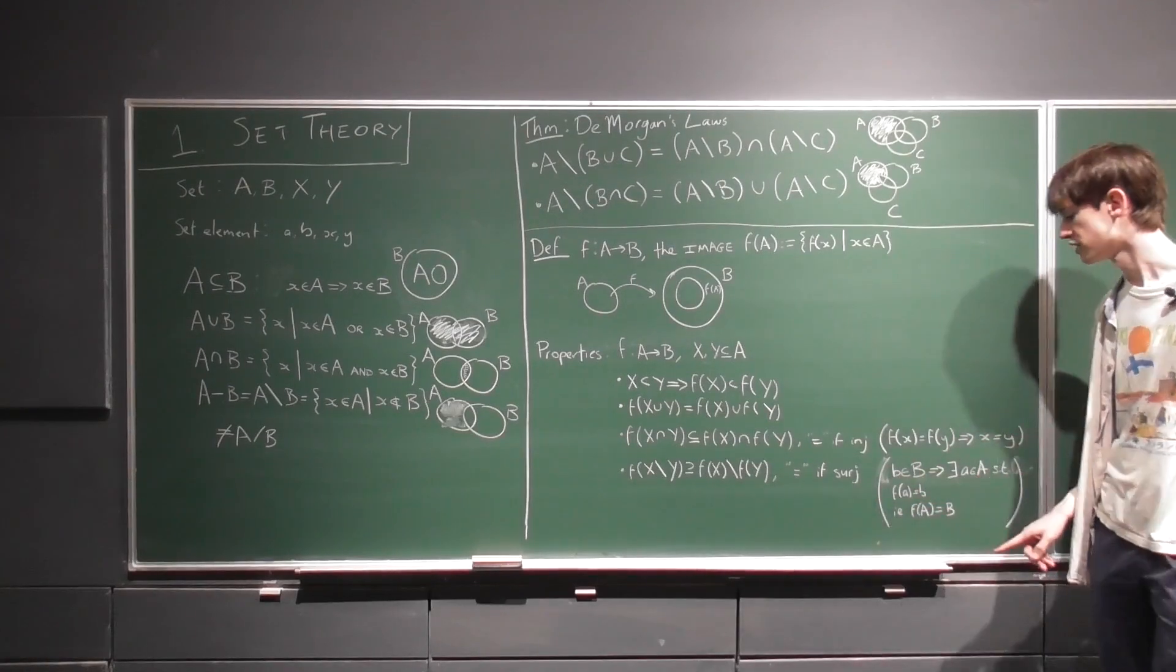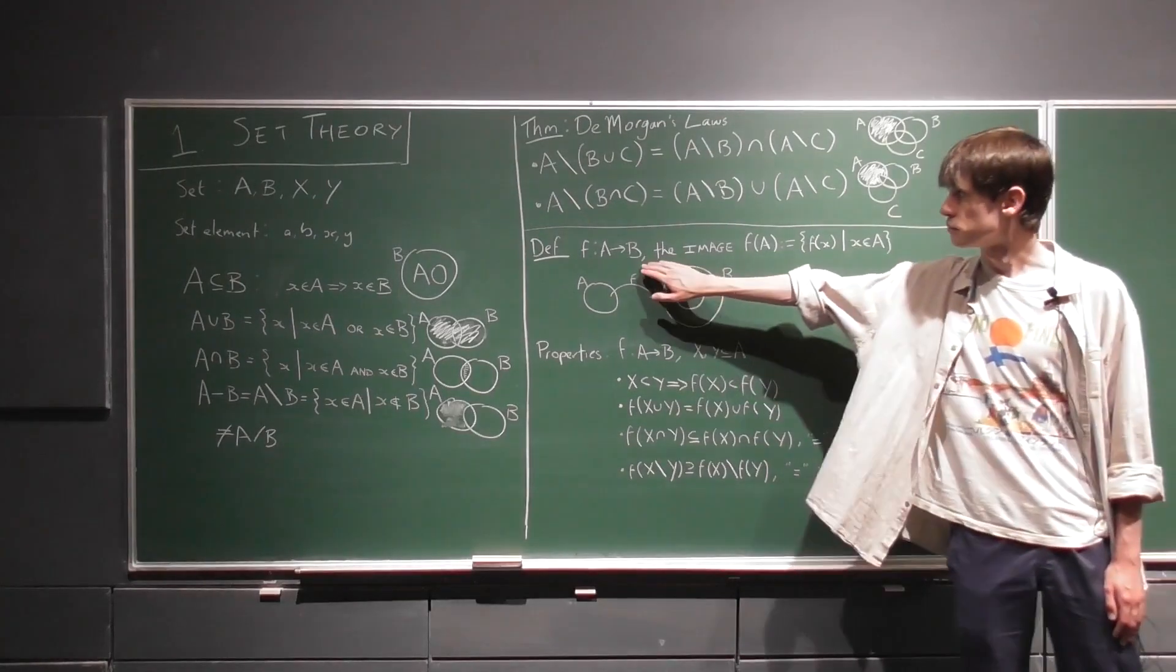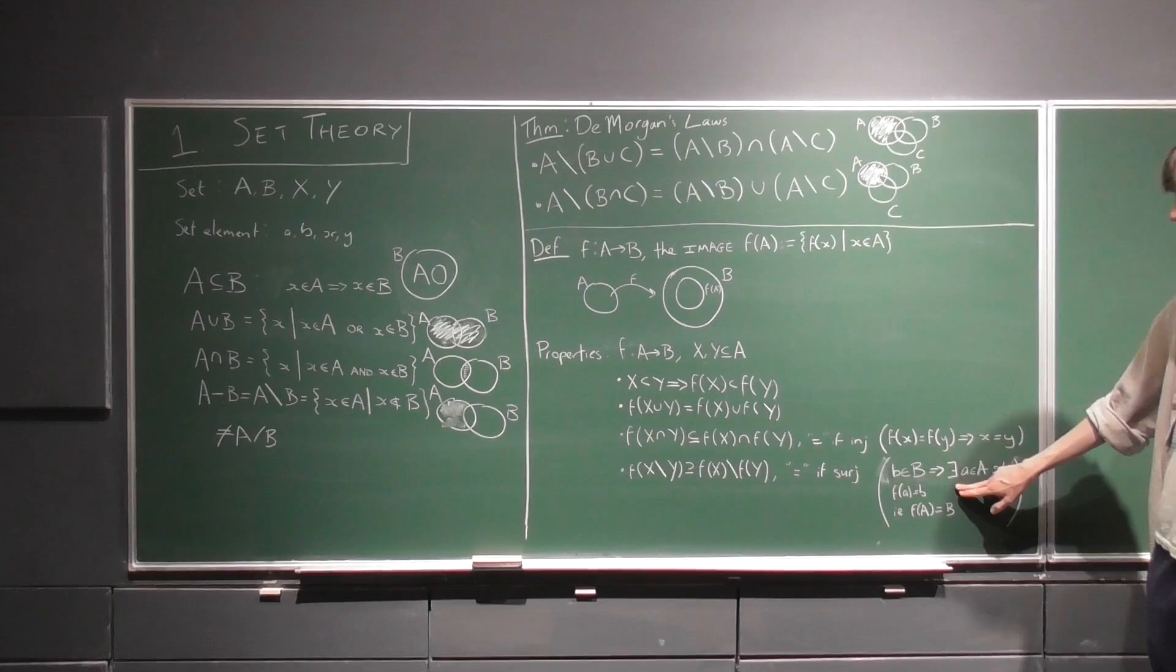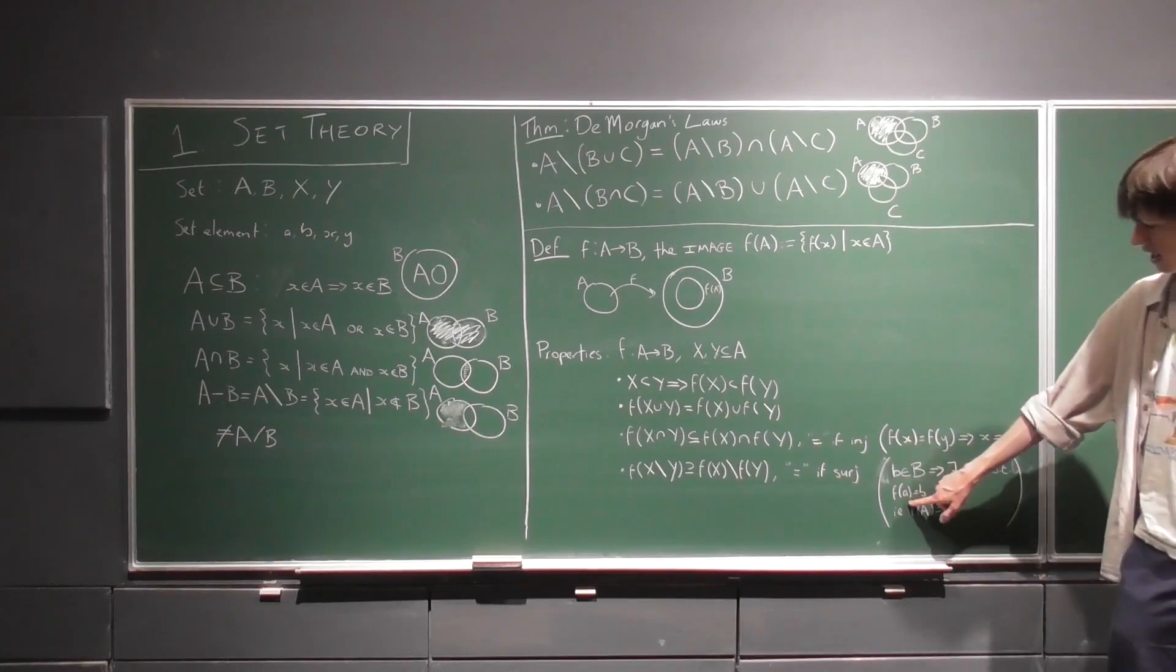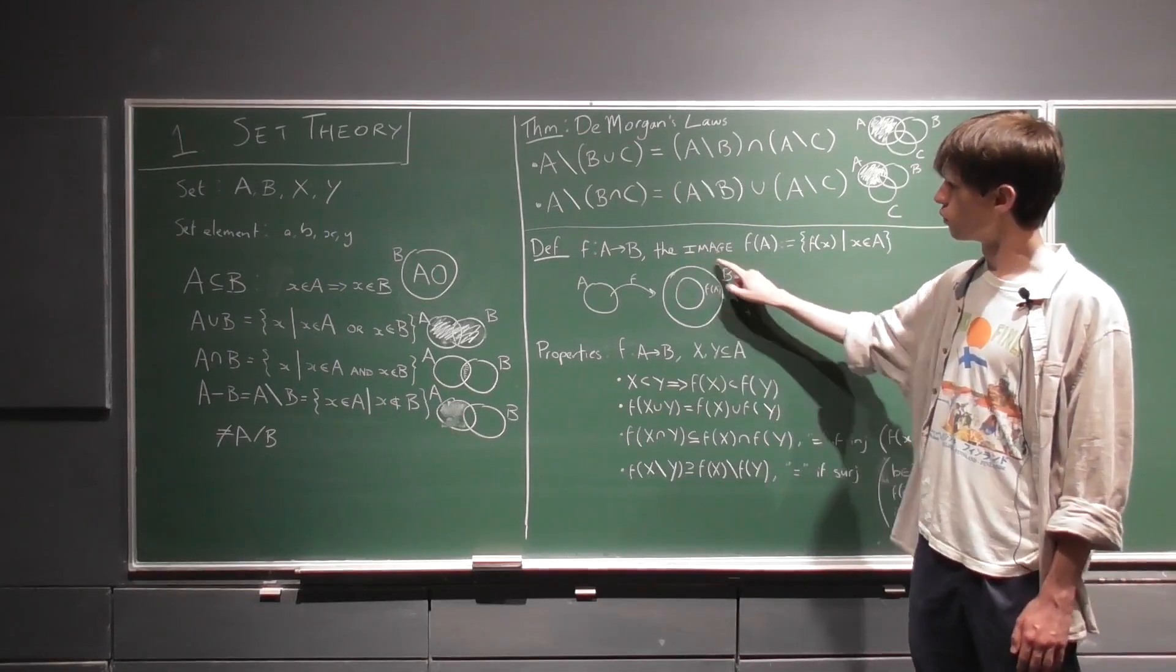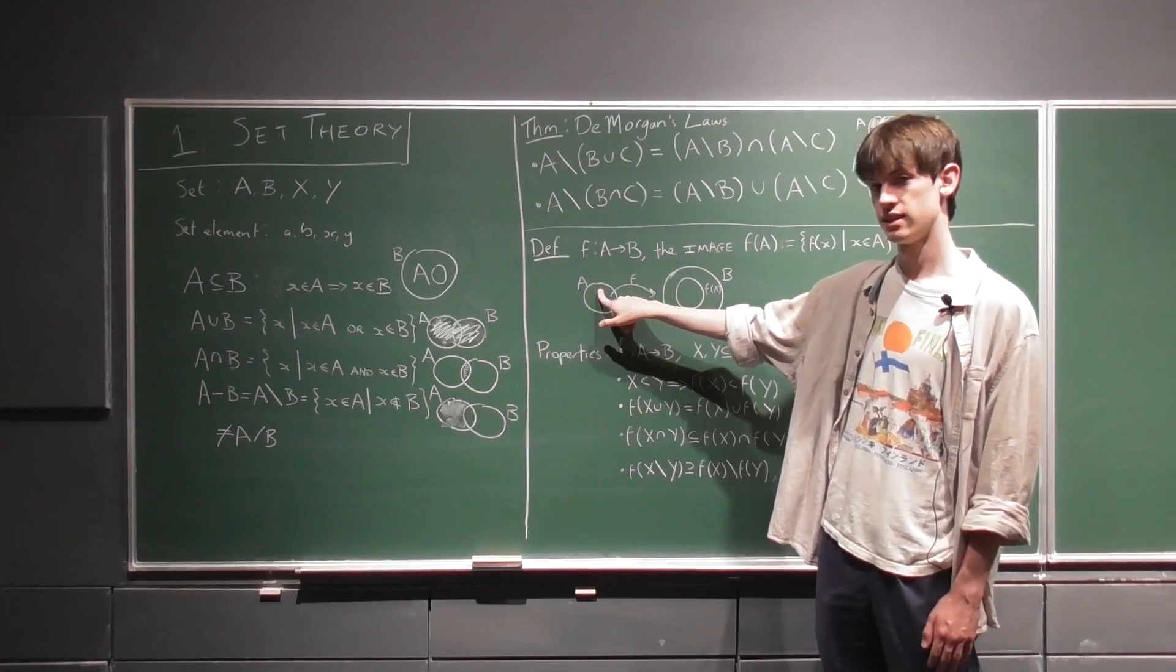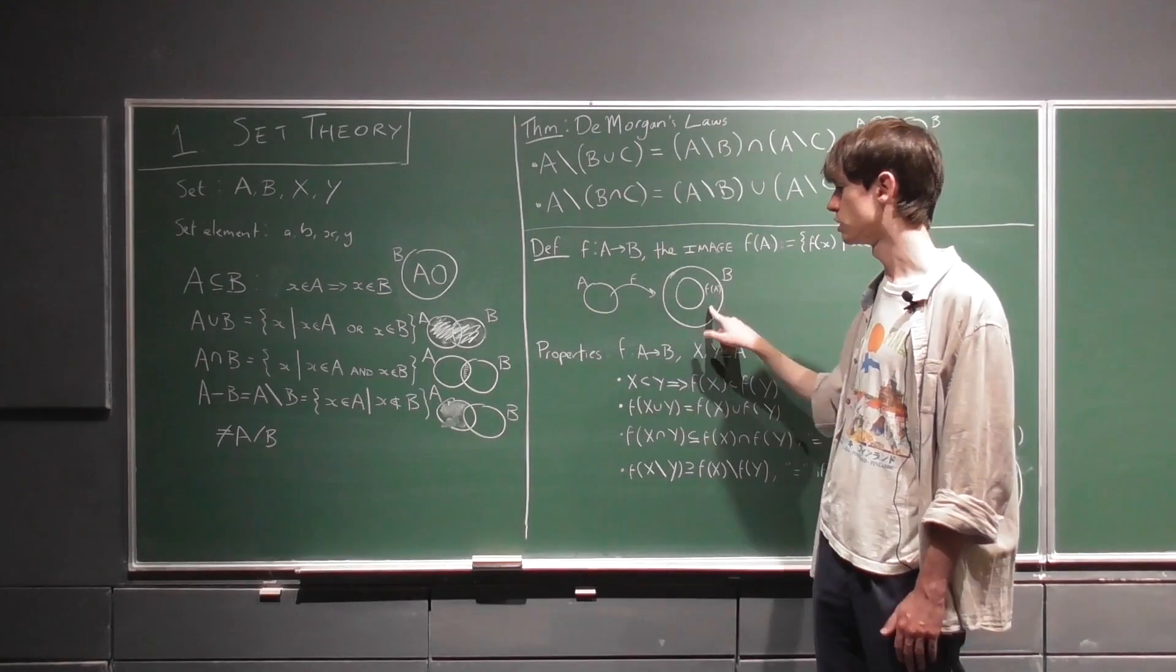So to remind you, surjective means that for any element b, so b here is the codomain, there exists at least one a in the set a, such that f of a equals b. So for any element that we choose here in b, we can find some other function here a that maps onto the function to that b.